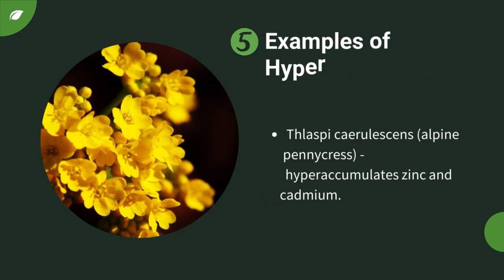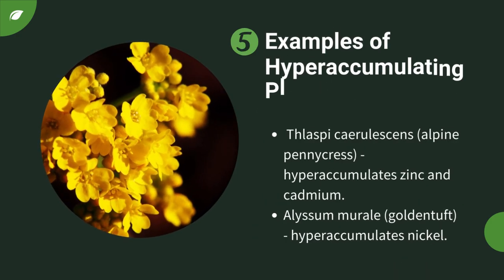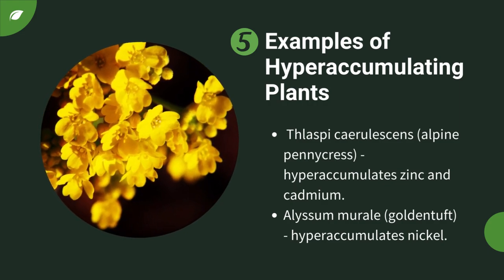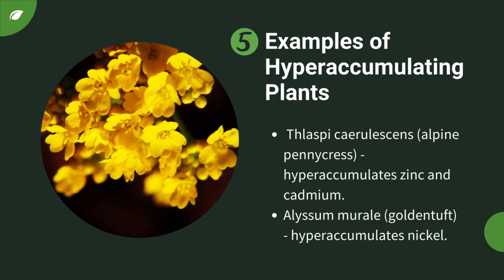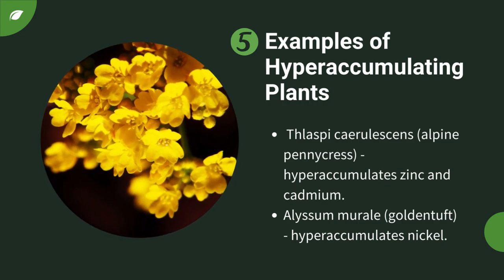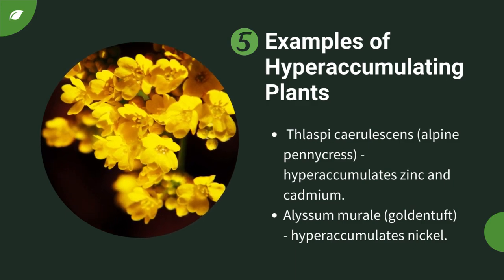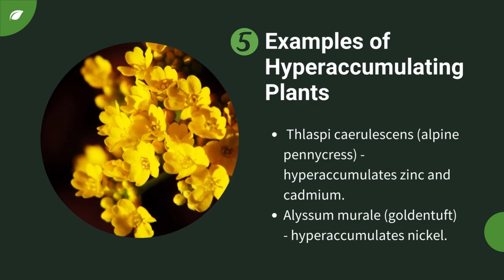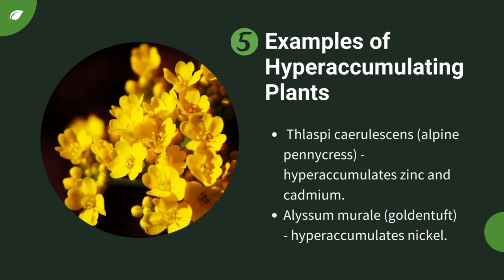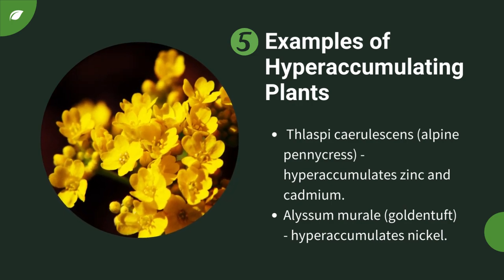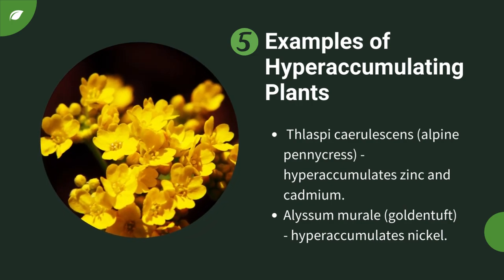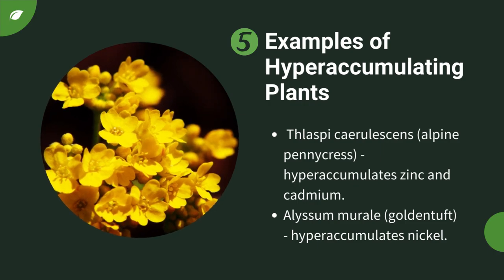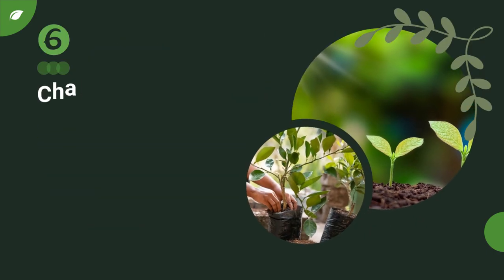Some notable examples of hyperaccumulating plants include Thlaspi caerulescens, also known as Alpine Pennycress, which hyperaccumulates zinc and cadmium, and Alyssum murale, known as Golden Tuft, which is known for hyperaccumulating nickel. These examples underscore the diversity of plants with this unique trait.